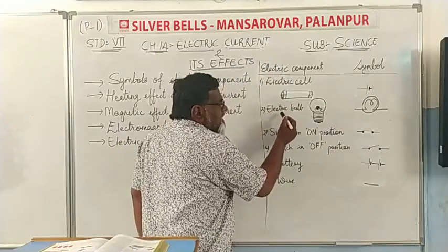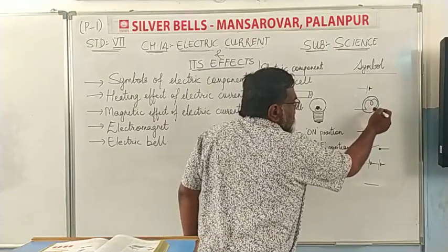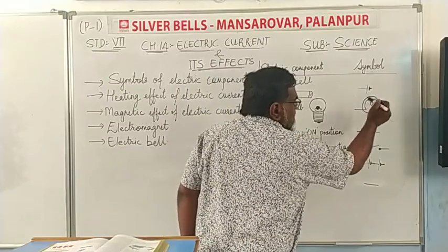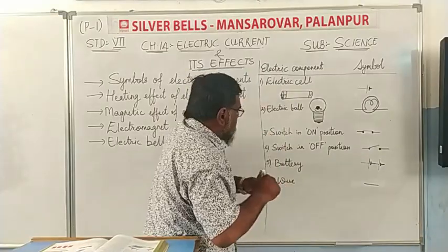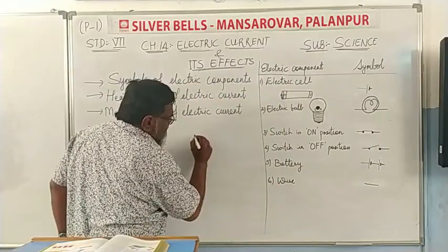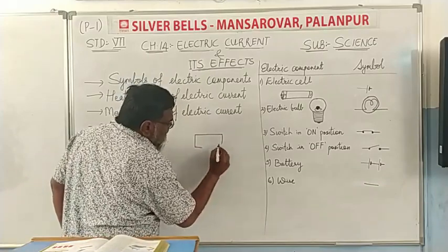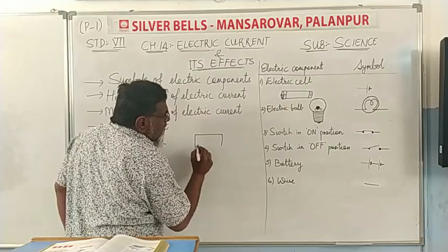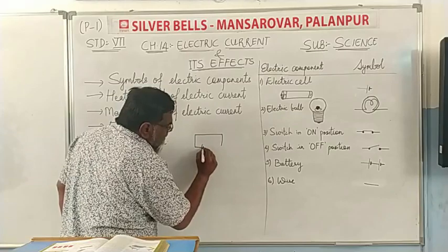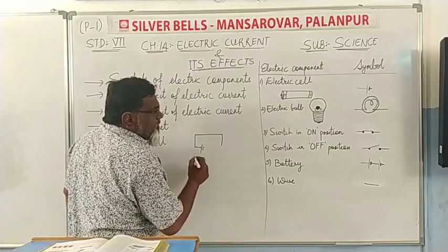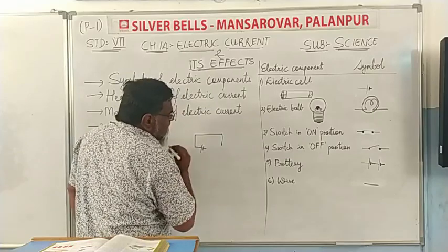Now the electric bulb — its symbol is a filament shape with a circle around it. The switch is also part of the circuit. We have taken a set of batteries, and the symbol uses a long line and a short line for the electric cell.